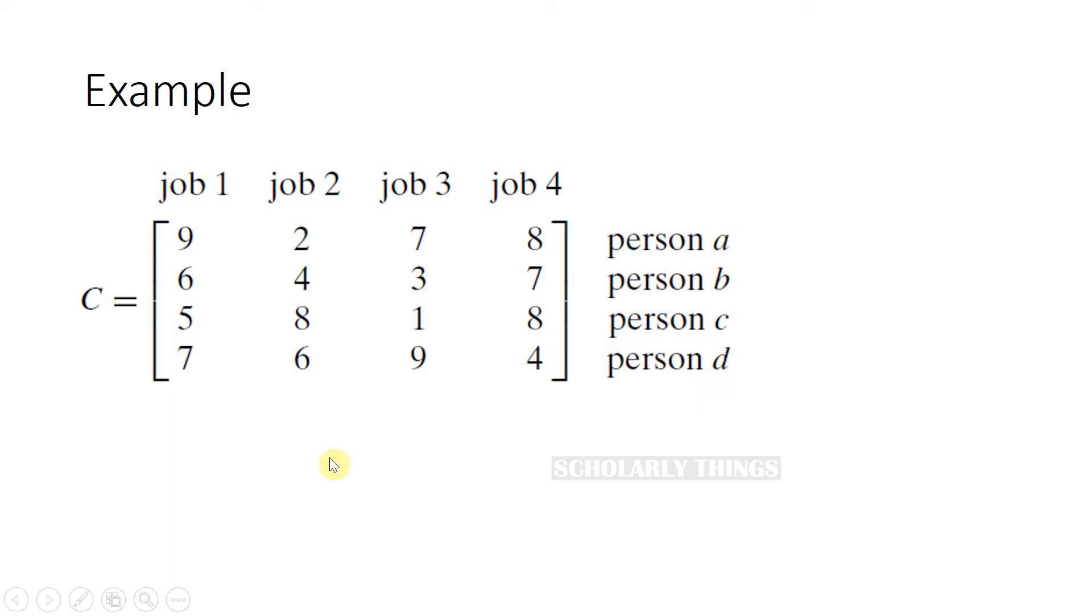First we need to set a lower bound. The cost of an optimal solution in any case cannot be smaller than the sum of the smallest elements in each of the matrix rows. Here in each row if you consider the smallest elements, the sum will be 2 plus 3 plus 1 plus 4 equals 10. This is the lower bound here.